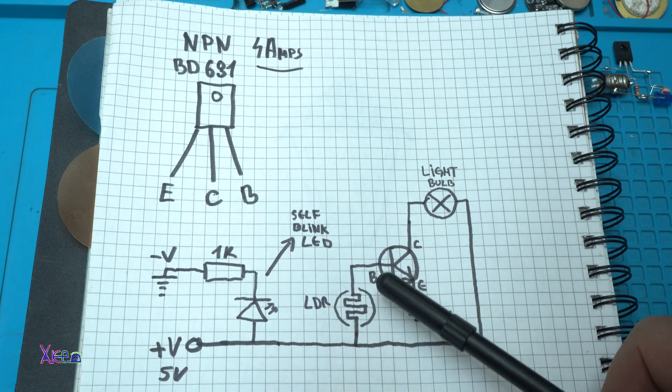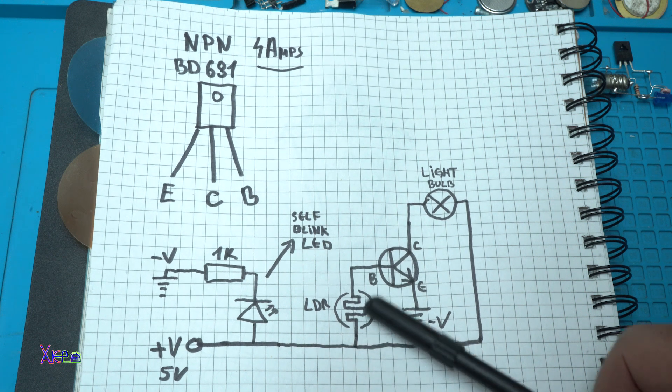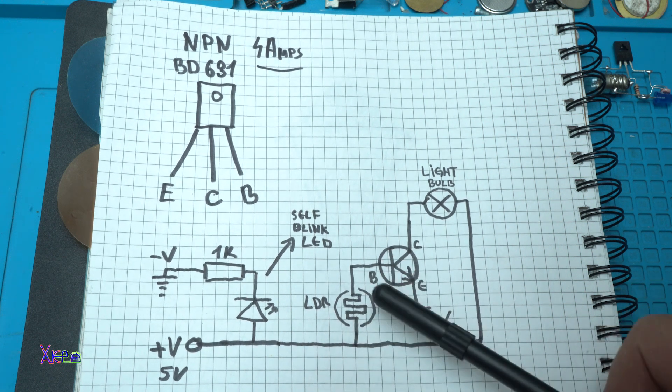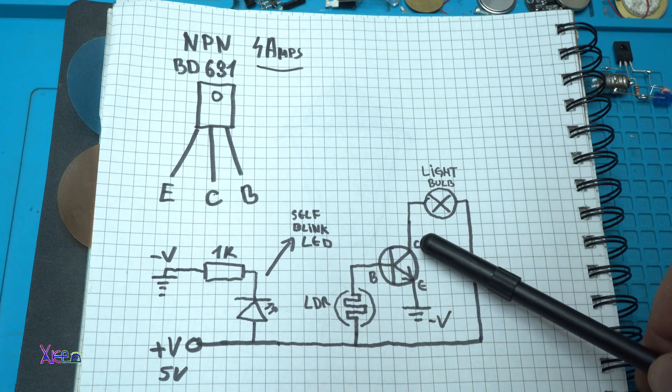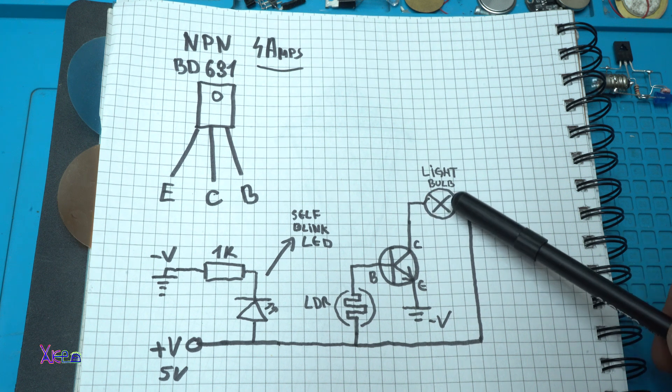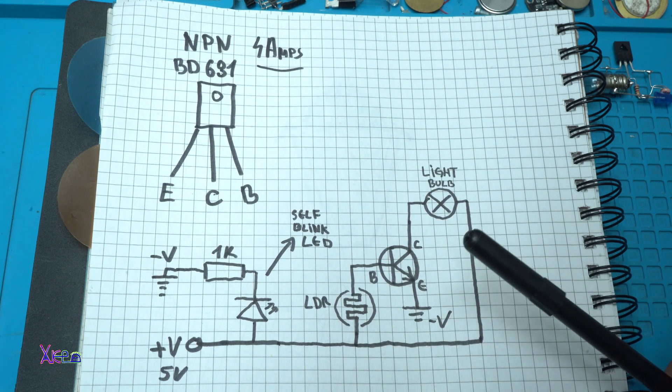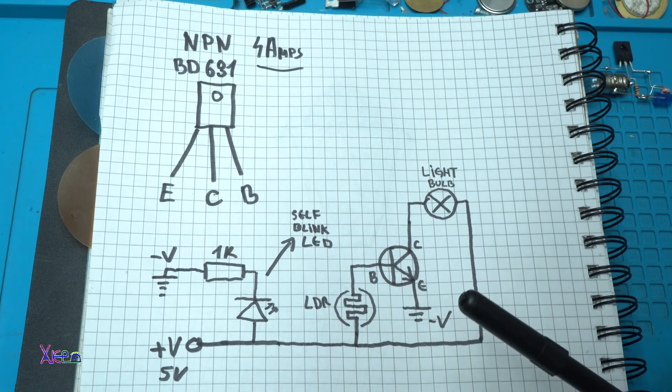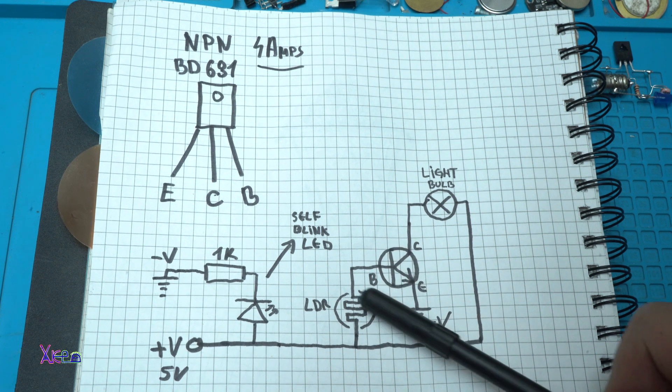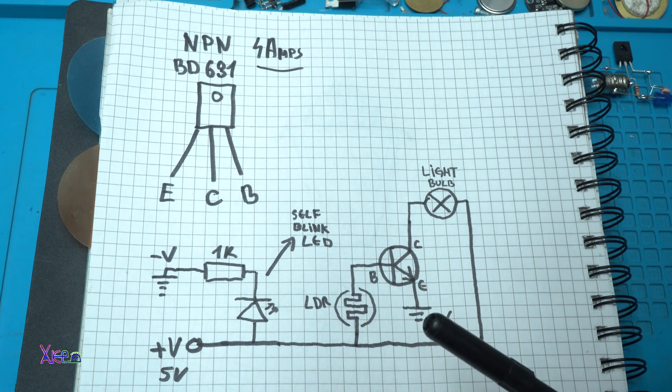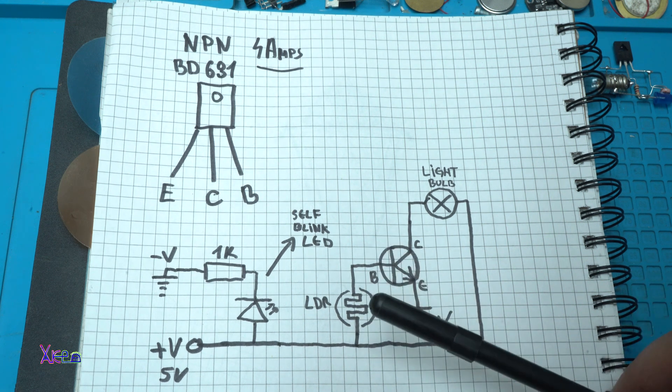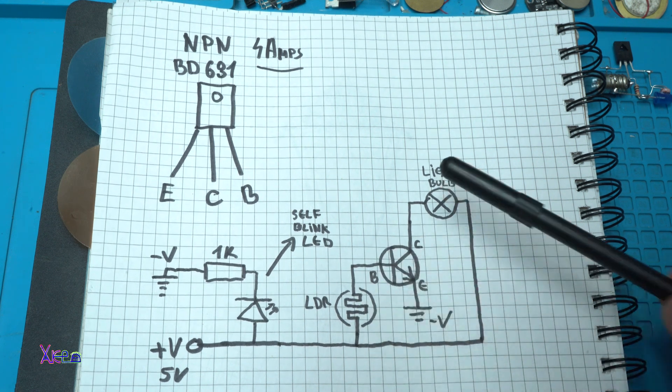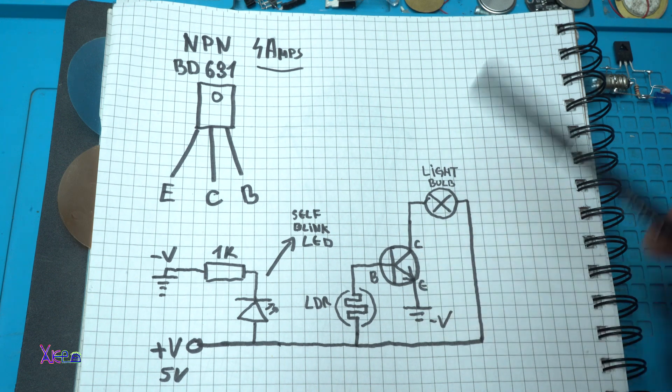We need one photo resistor that will control the base of the transistor. On the collector is hooked up the light bulb and on the emitter is connected to ground. When the photo resistor detects light that will change the value to the base and the light bulb will blink.